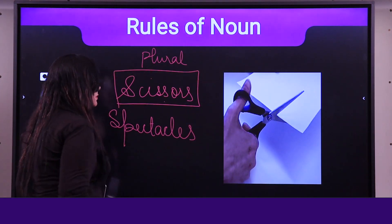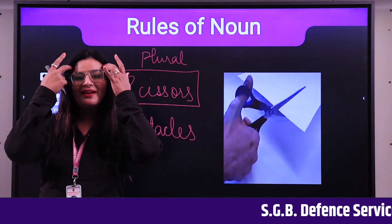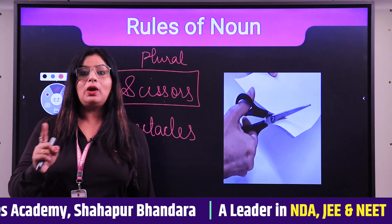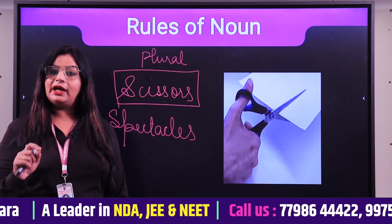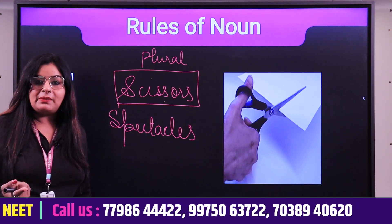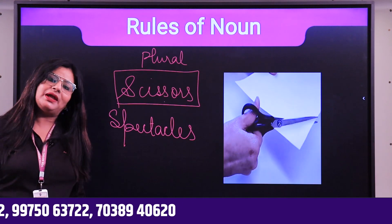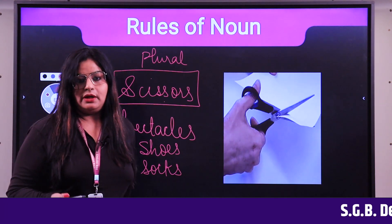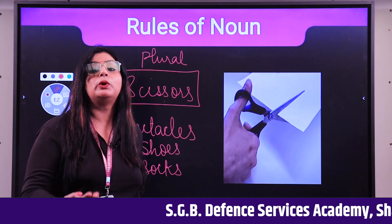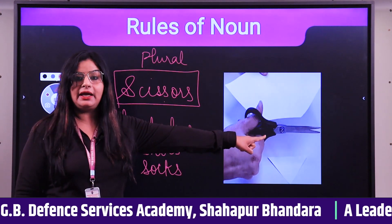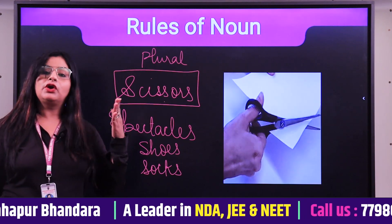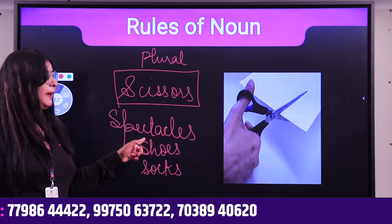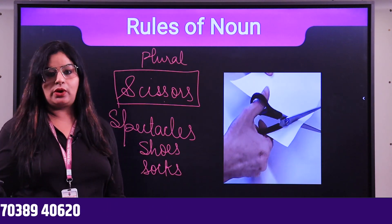Similarly, spectacles (glasses/chashma) are made of two frames and two lenses joined together — so even one pair of spectacles is treated as plural. Shoes and socks are always used in pairs, so they are always counted as plural nouns. No matter that visually it appears as one item, because two parts join to form it, we always count these as plural nouns.